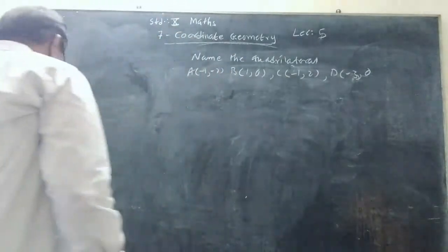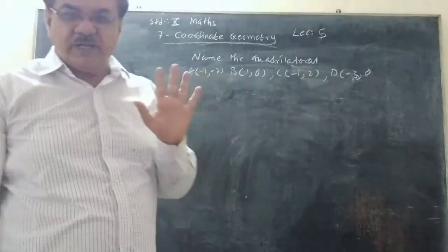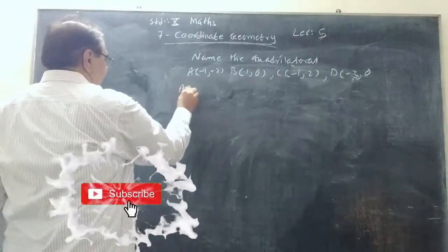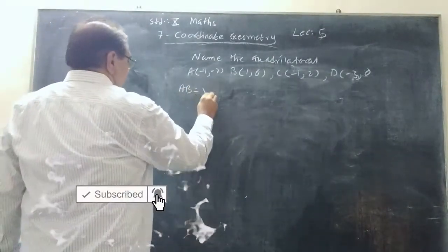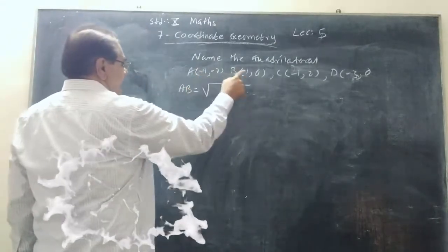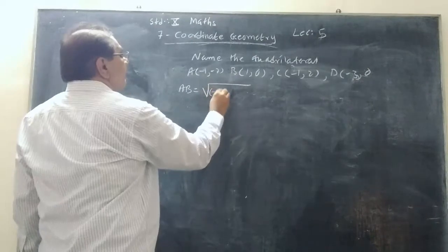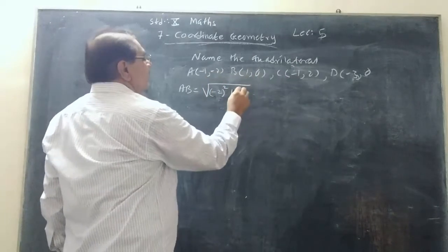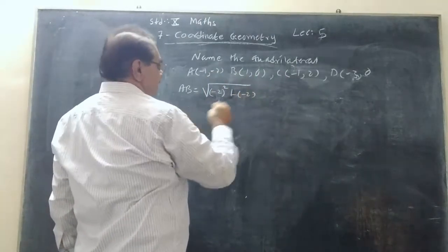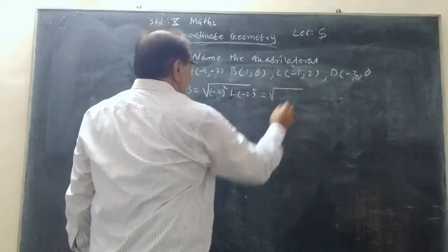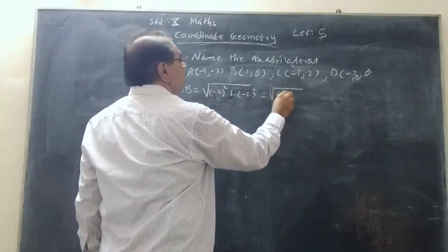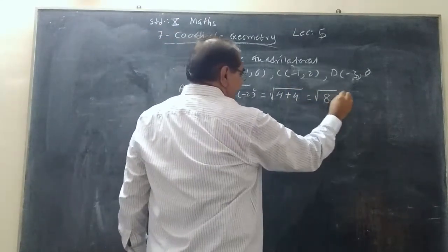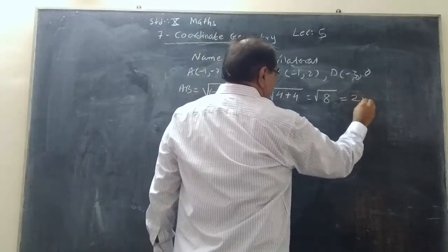Let us check. What we will use? We will just find out all the distances — the length of 4 sides. AB = √[(1-(-1))² + (0-(-2))²] = √[(-2)² + (-2)²] = √[4+4] = √8 = 2√2.